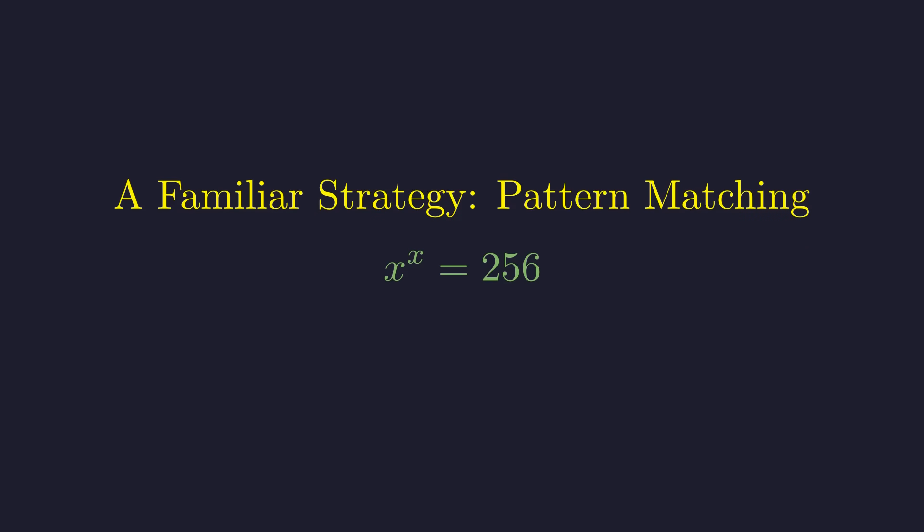Consider the equation: the variable x raised to the power of x equals 256. The main strategy here is to rewrite the number on the right-hand side so that its base and its exponent are the exact same number.